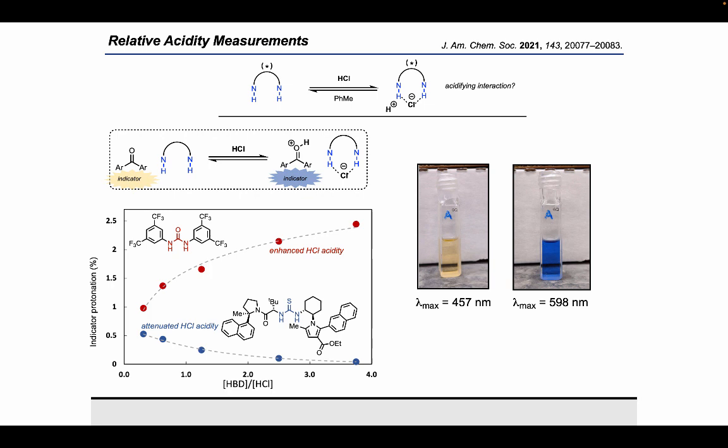As expected, some types of hydrogen bond donors, including this simple diaryl urea, did provide the expected increase in the relative acidity of HCl as measured by increased protonation of the indicator. However, in contrast, in the same type of titration experiment, we found that the optimal type of H-bond donor catalyst in this reaction resulted in a decrease in the relative acidity of HCl. This was quite enigmatic to us, and we wanted to understand the origin of this effect.